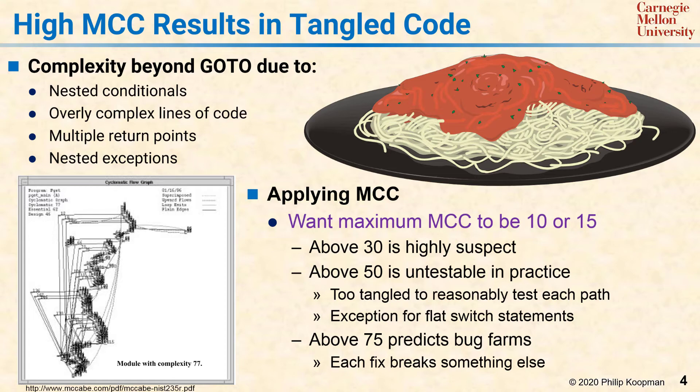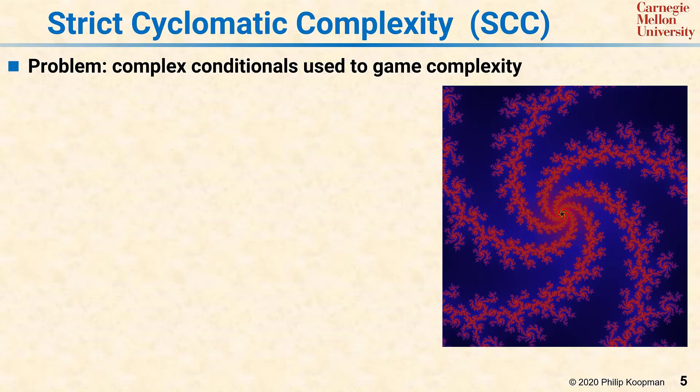It's important to note that these numbers are approximate, and depending on your situation, you might want somewhat different target numbers. While McCabe Cyclomatic Complexity, or MCC, is a generally accepted and useful complexity metric, it has a vulnerability in that it can be gamed by using complex conditionals to replace nested if statements.